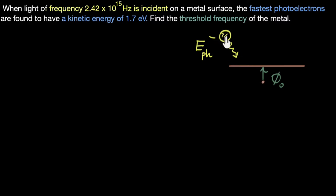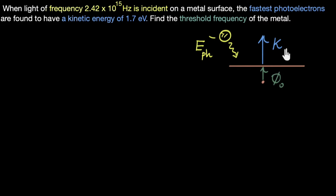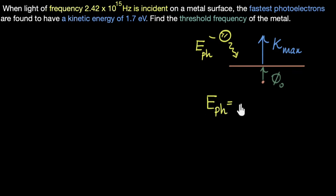So if the photon has more than enough energy, part of it is used to overcome the work function and the rest comes out as kinetic energy — the maximum kinetic energy. Most electrons will lose kinetic energy internally, so only very few come out with this maximum value. But from energy conservation, the energy of the photon must equal the work function plus the maximum kinetic energy. That is Einstein's photoelectric equation.